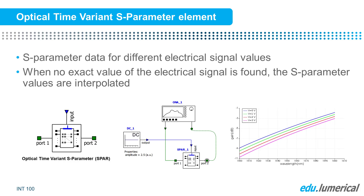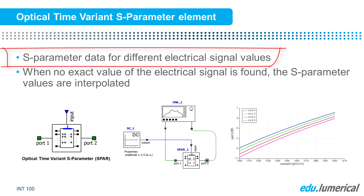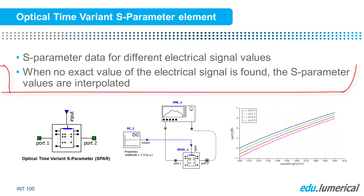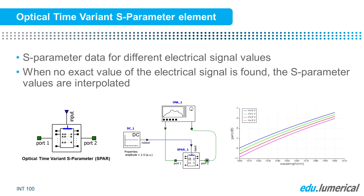Another S-parameter element is the time variant S-parameter element. Active components often have a frequency response that depends on the applied voltage bias or current. The time variant S-parameter element takes frequency response data for different electrical signal values, and when no exact value of the electrical signal is found, the S-parameter values are interpolated from the data.